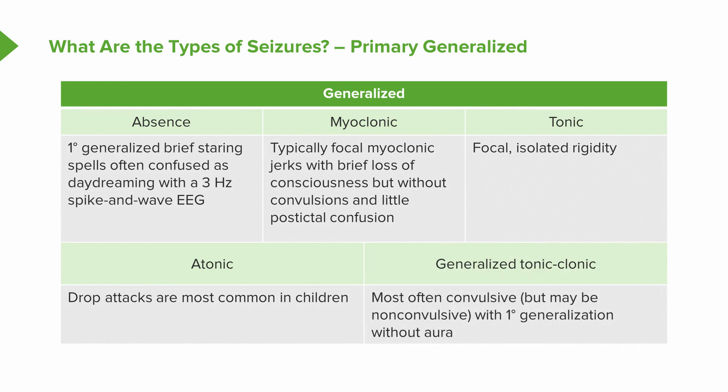Generalized tonic-clonic seizures look very similar to secondary generalized tonic-clonic seizures, but they do not have an aura and do not have a clearly observed focal onset. Most often they involve convulsion, but may be non-convulsive in patients with primary generalized epilepsy without aura.